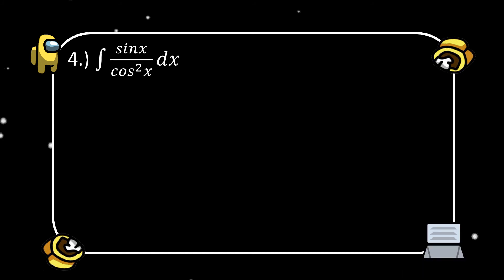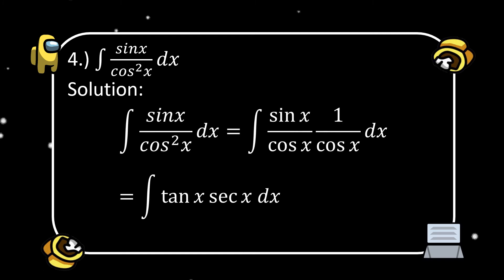Another example: the integral of sin x over cosine squared x dx. From this integral, when we factor, the result is the integral of (sin x over cosine x) multiplied by (one over cosine x) dx. Remember that sin x over cosine x, from our quotient identities, is tangent x. And one over cosine x, from our reciprocal identities, is secant x. So we have the integral of tangent x secant x dx. From our theorem, that is secant x plus C.